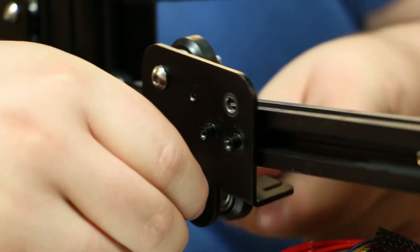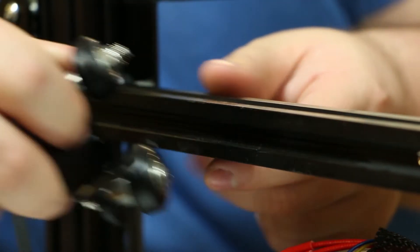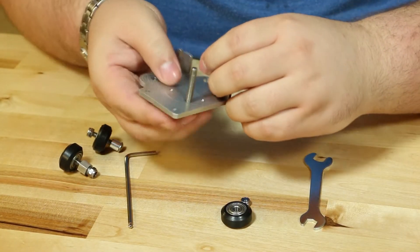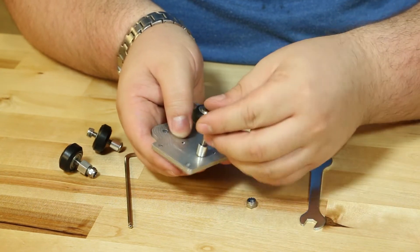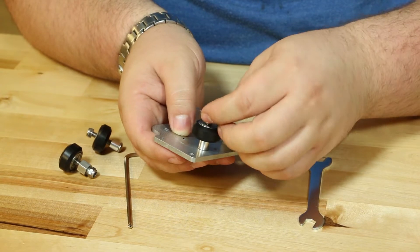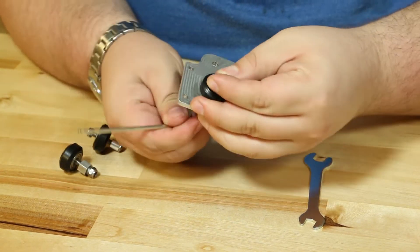After the second wheel is removed, you can remove the carriage from the gantry. Place the top wheels on the new carriage. Make sure that one wheel is tightened all the way and the other wheel has the nut only loosely threaded on. This will make placing the carriage onto the gantry much easier.